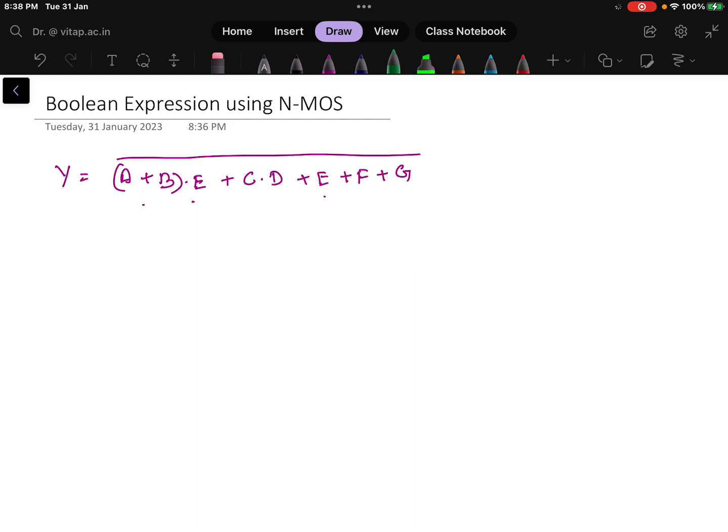How many inputs are there? 1, 2, 3, 4, 5, 6, 7 - so there are 7 inputs in this case: A, B, C, D, E, F, and G.